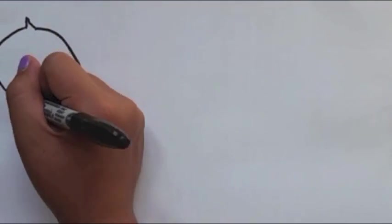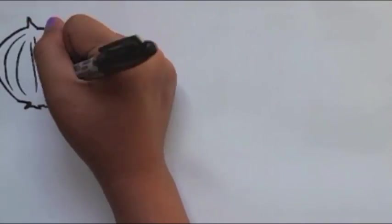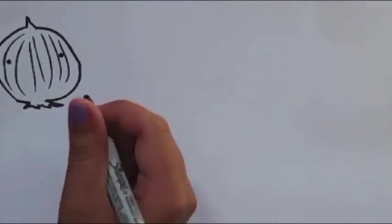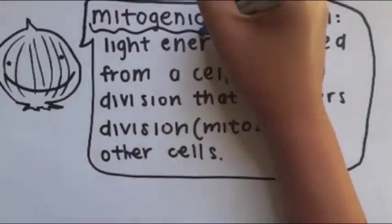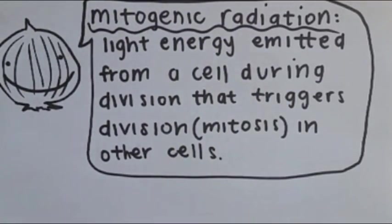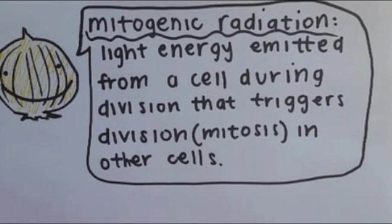Another well-known use of biophysics was Gershowitz's famous onion experiment. He used biophysics to study mitogenetic radiation. Gershowitz studied the effects of different types of light on cell division, or mitosis, of an onion plant and discovered that living cells emit light.